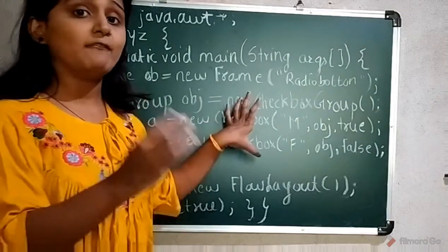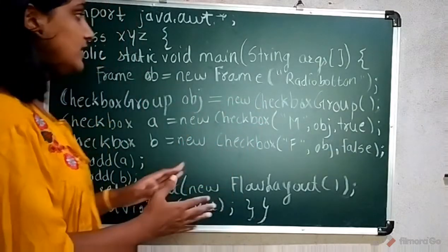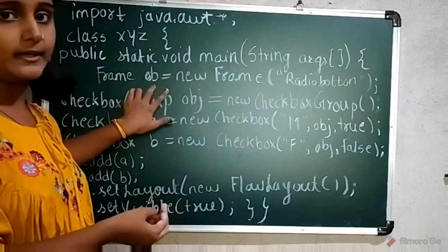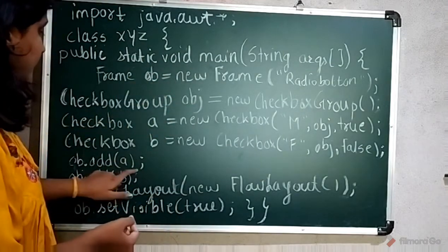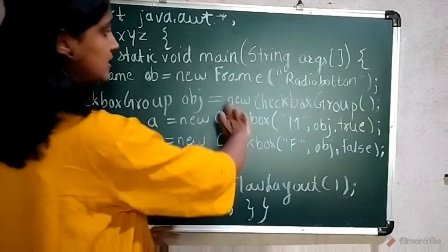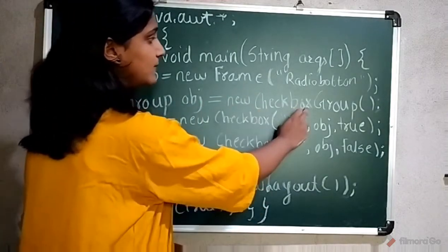Now I've created these radio buttons. I want to add them to the frame, so using this object ob.add a and b. So this object I will add here, the connection will be of these two checkbox objects you created.